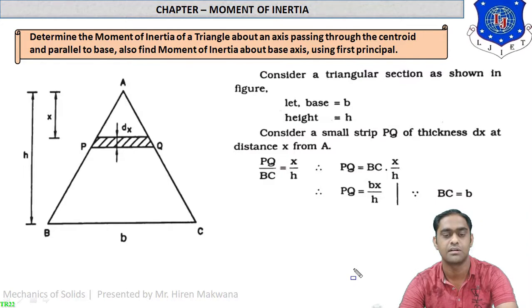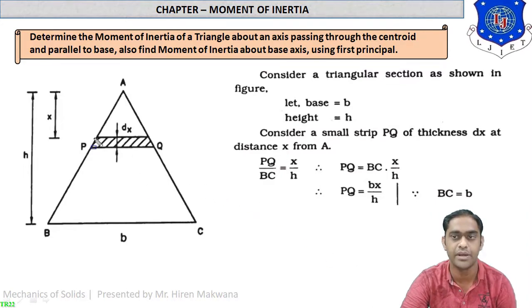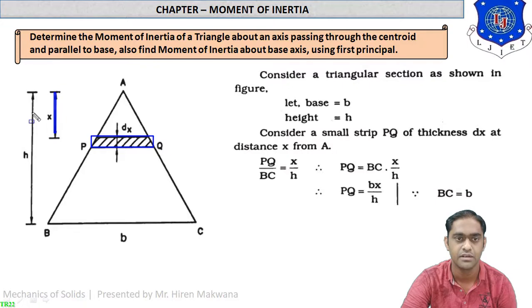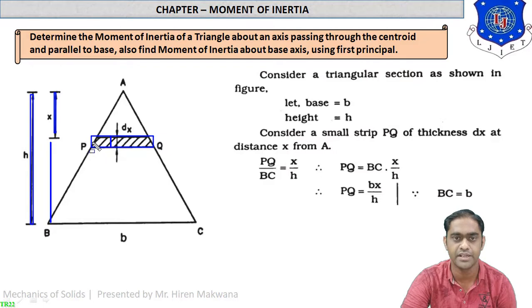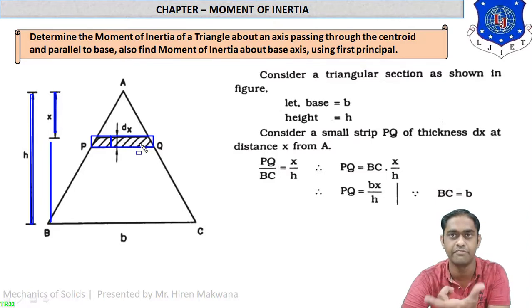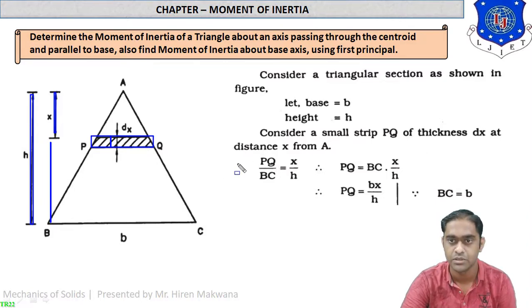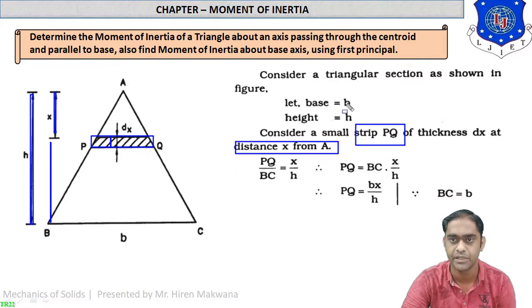Now the same approach applies to the triangle. There is a strip at a distance x from the top vertex. The total height of the triangle is h, and the bottom distance from the strip to the base is h minus x. The width of the strip is dx. Since the strip width varies continuously from bottom to top, we use similar triangles. Consider a small strip of thickness dx at distance x from vertex A; the base of the triangle is b and height is h.